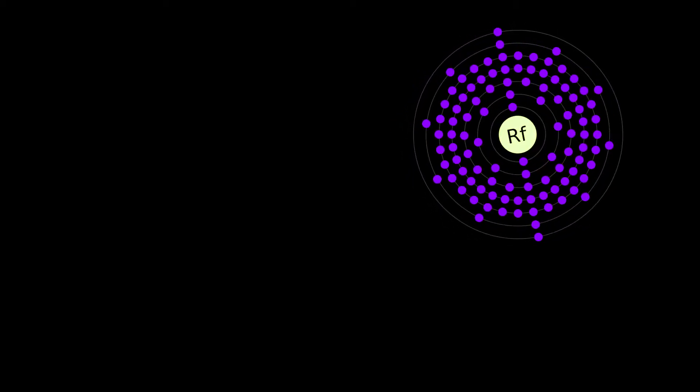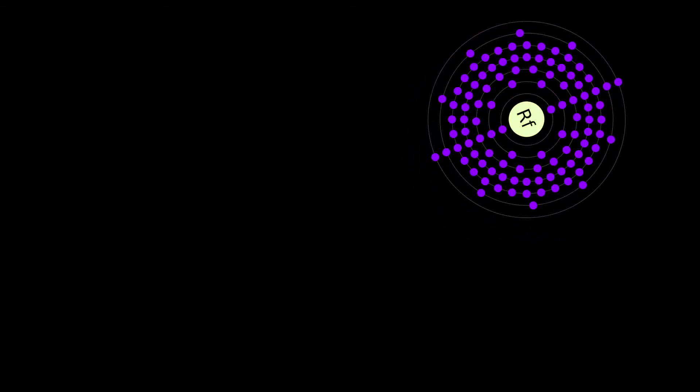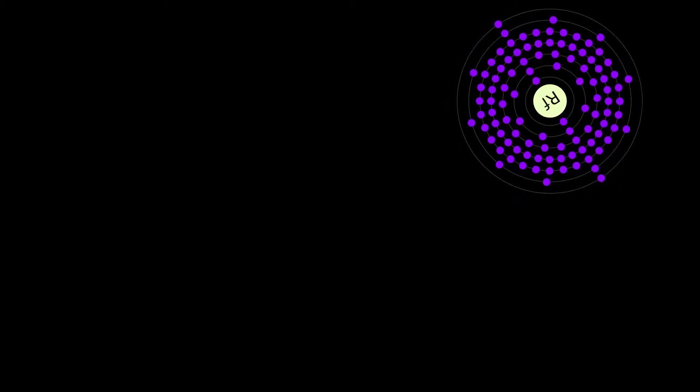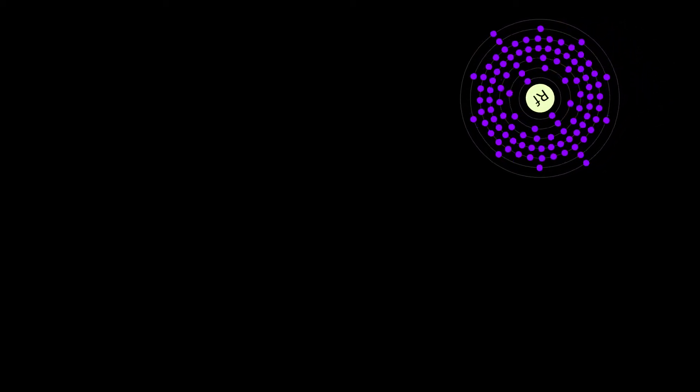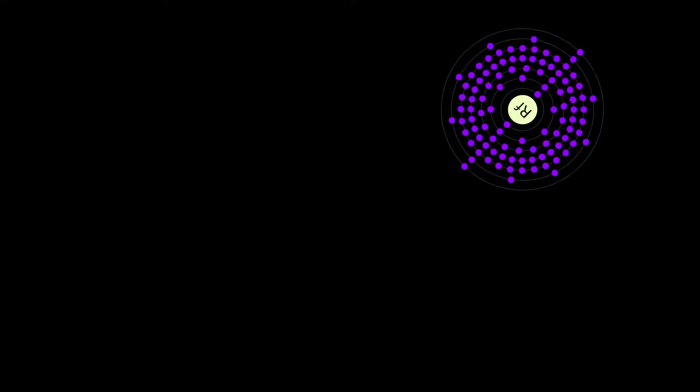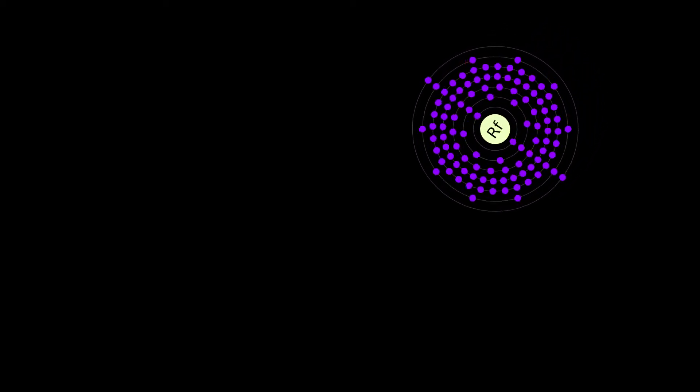The most stable known isotope, 267RF, has a half-life of approximately 1.3 hours. In the periodic table of the elements, it is a D-block element and the second of the fourth row transition elements. It is a member of the seventh period and belongs to the group 4 elements.